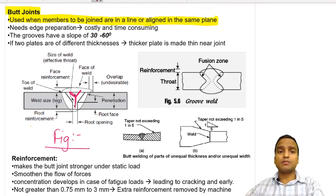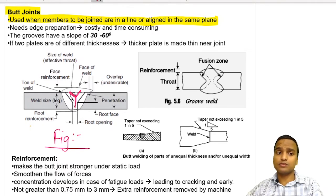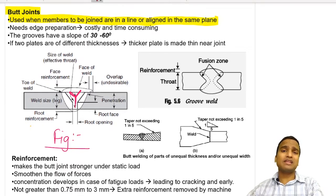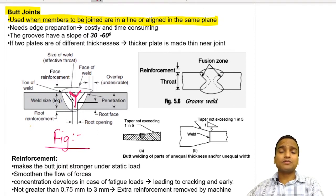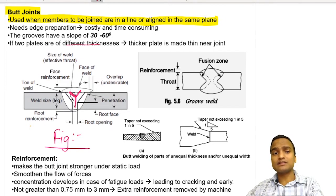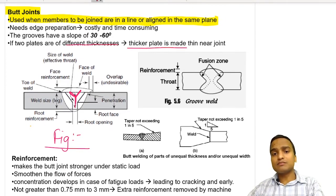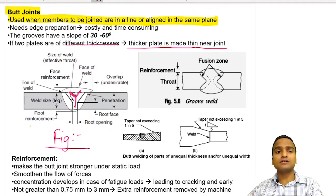Edge preparation is costly and time consuming. The slope of the groove is normally in the range of 30 to 60 degrees. If the two plates are of different thicknesses, the thicker plate is made thin near the joint, which also comes under the category of edge preparation.